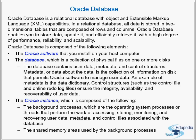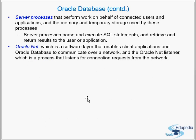When I say 'instance,' I mean the background processes plus the shared memory. When I say 'database,' I mean the physical files on the disk — not the instance. Many people assume 'Oracle database' includes the processes, shared memories, and everything, but database and instance are different. The other elements are server processes that perform work on behalf of connected users and applications, along with the temporary storage used by these processes.